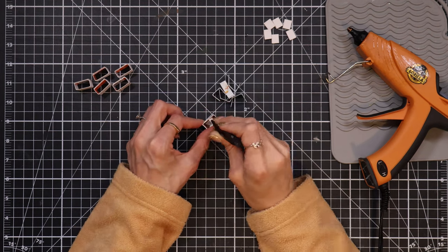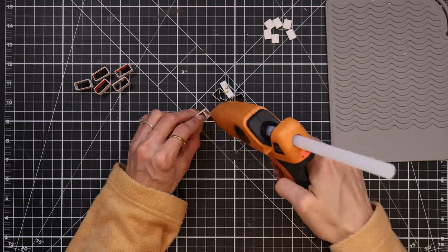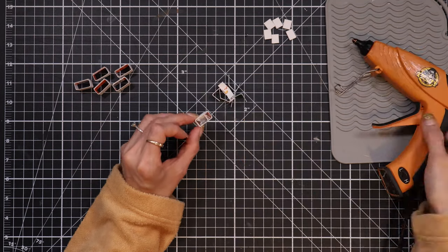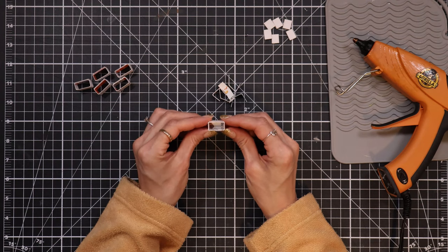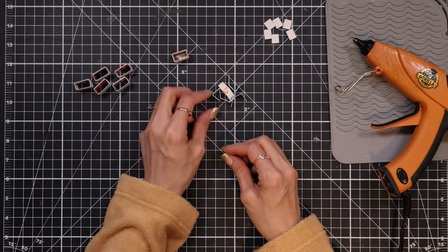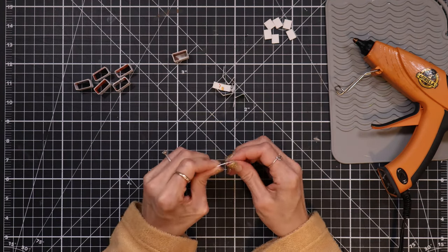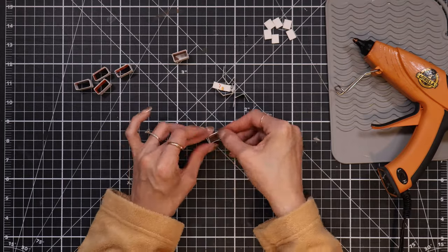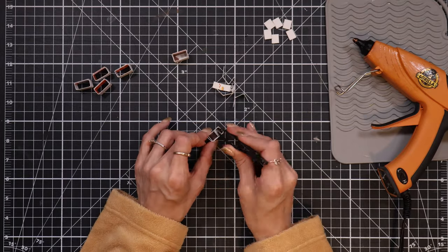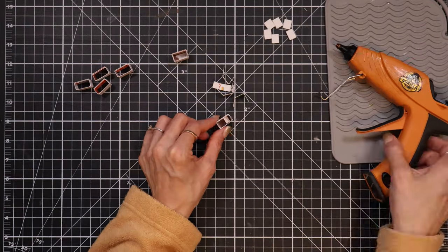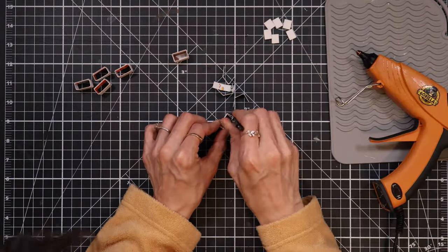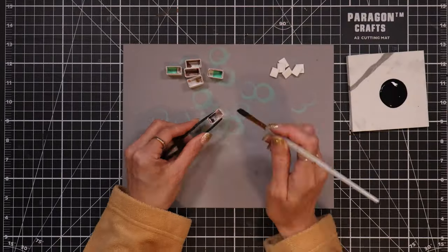I do recommend using hot glue here if possible, just because it does dry so quickly, there's no real chance for the flaps to come undone while it's drying. If you don't have hot glue, you can always use a clothespin to pinch things together while it's drying. After those are finished, I go ahead and paint the inside and outside of the drawers and the dividers.